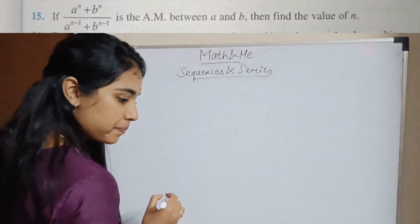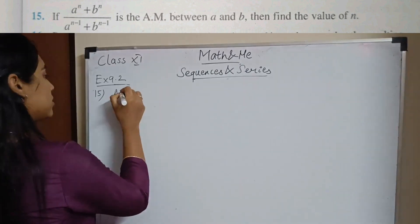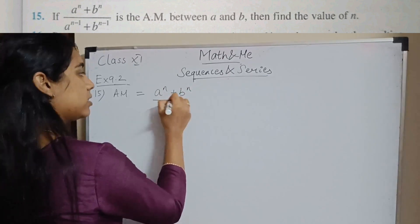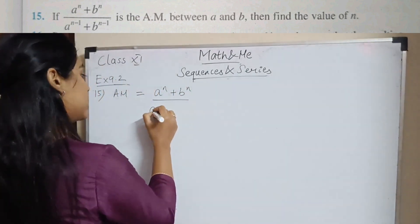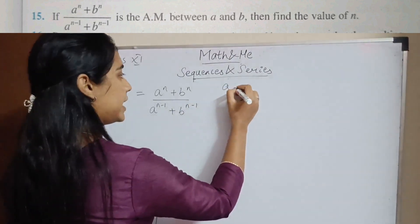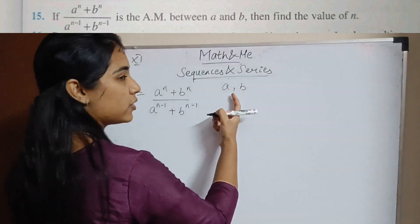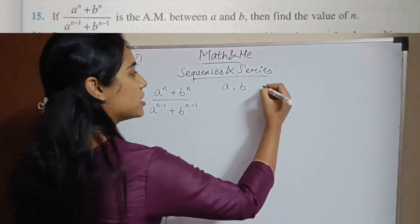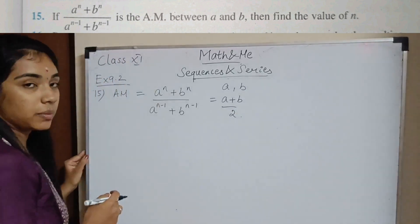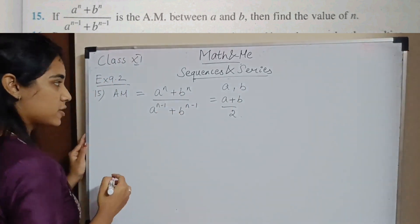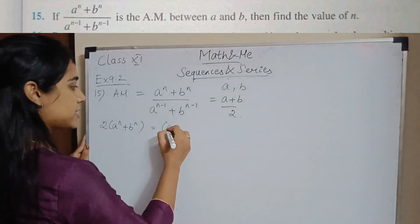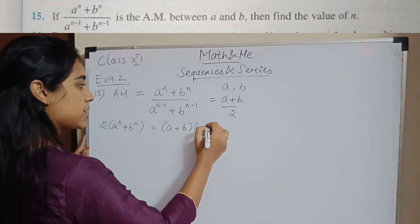Question number 15: the arithmetic mean of a and b is given as (aⁿ + bⁿ) / (aⁿ⁻¹ + bⁿ⁻¹). The arithmetic mean of a and b is (a + b) / 2. We equate these and cross multiply: 2(aⁿ + bⁿ) = (a + b)(aⁿ⁻¹ + bⁿ⁻¹).